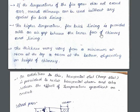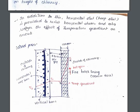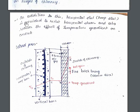For higher temperatures, fire brick lining is provided inside the chimney to resist the heat. The lining is provided with a gap between the inner face of the chimney shell and the lining. The thickness of the shell may vary from a minimum of 15 cm at the top to 45 cm at the bottom, depending on the height. Horizontal hoop steel is also provided to resist horizontal shear and reduce the effect of temperature gradient.